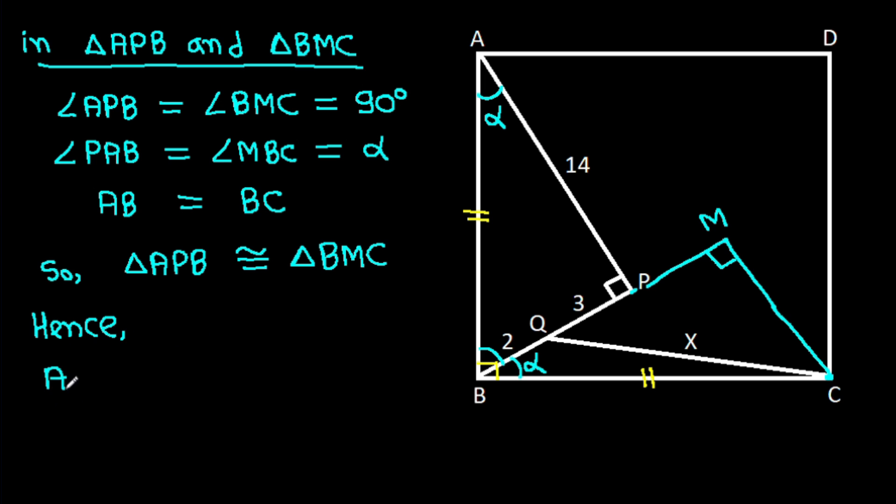Hence, AP will be equal to BM, and AP is 14. And MP will be equal to BM minus BP, which is 14 minus 2 minus 3, that will be 9. So MP is 9.